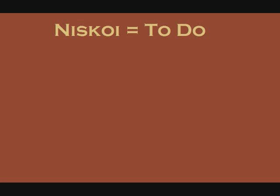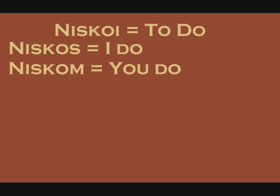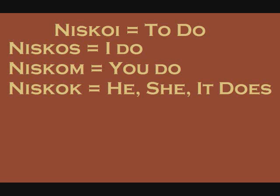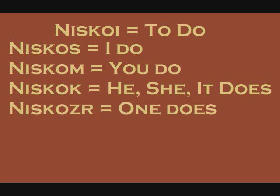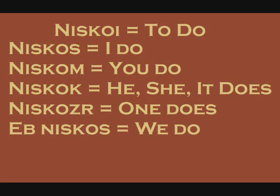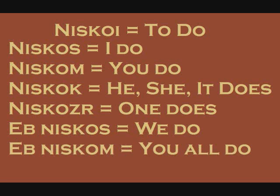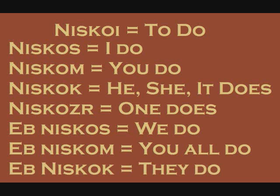Let's conjugate another verb: NISCOI, to do. First person: NISCOS, I do. Second person: NISCOM, you do. Third person: NISCOC, he, she, it does. Fourth person: NISCOZER, one does. And we can pluralize the first three: EB NISCOS, we do; EB NISCOM, you all do; EB NISCOC, they do.